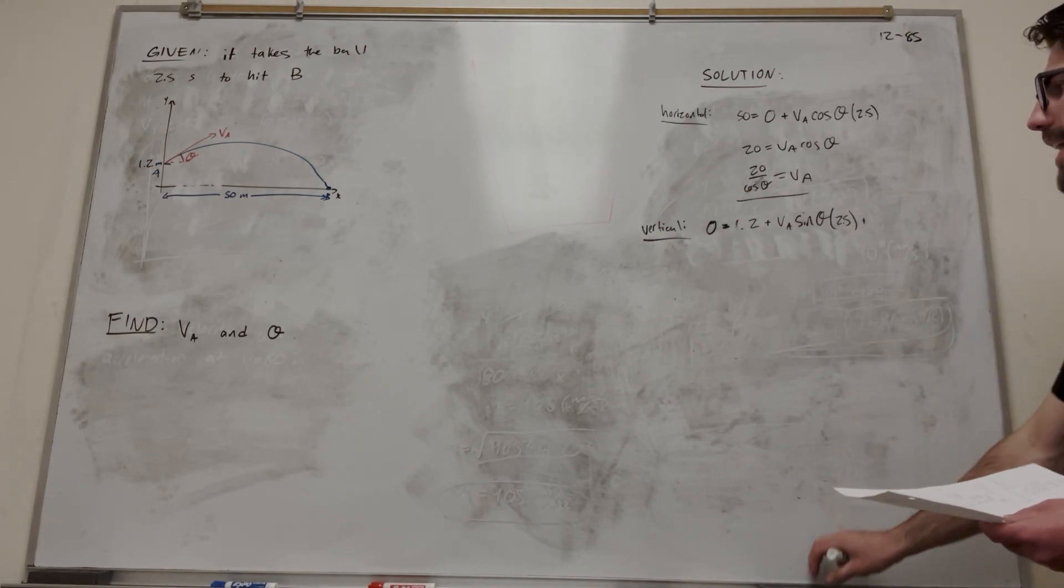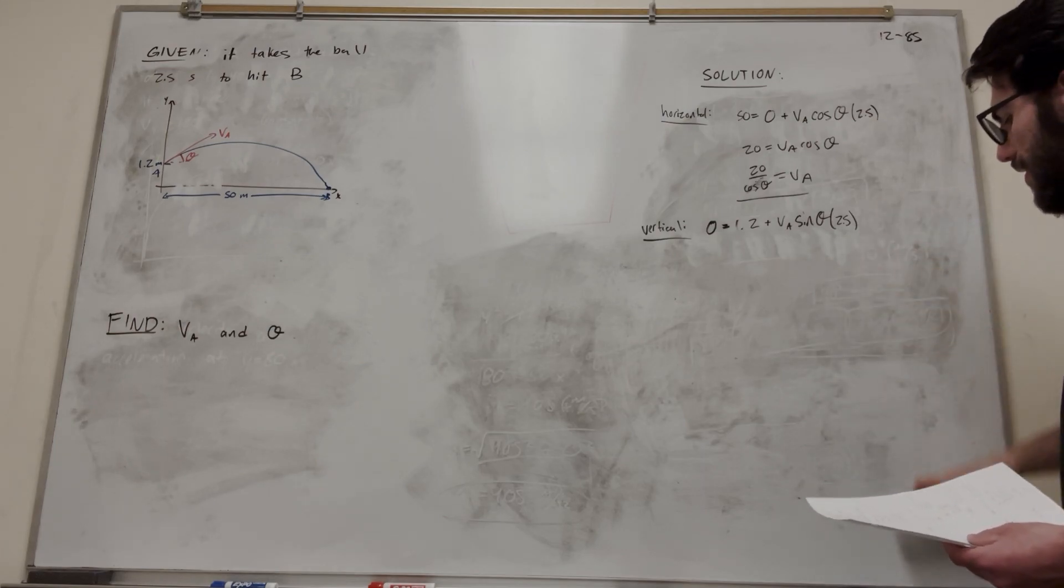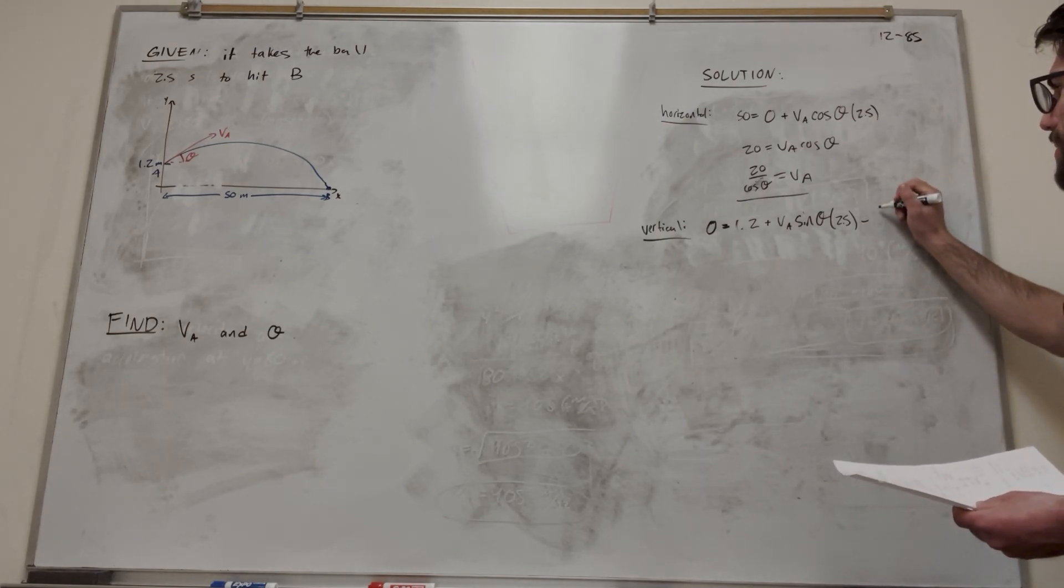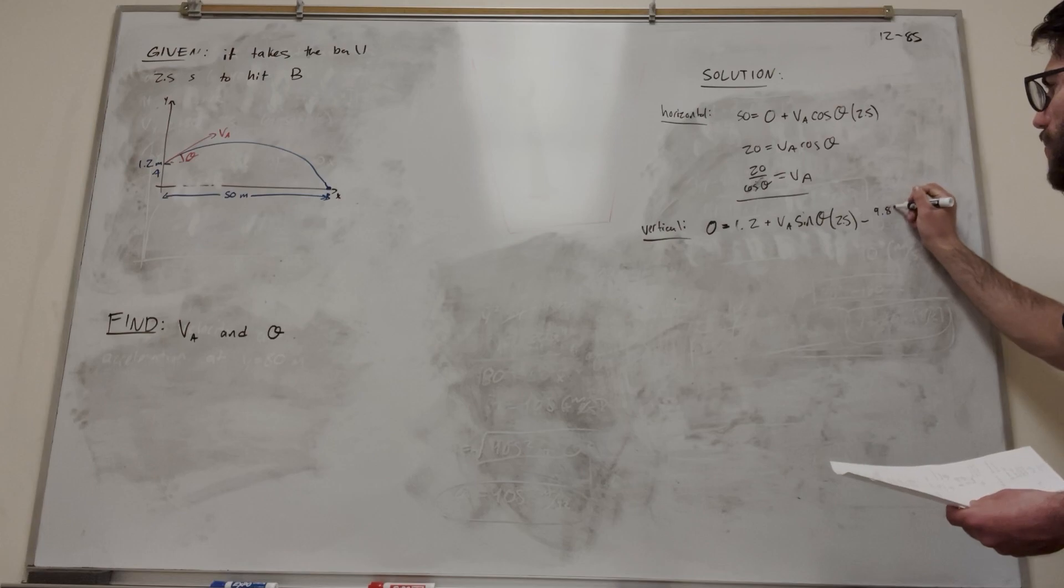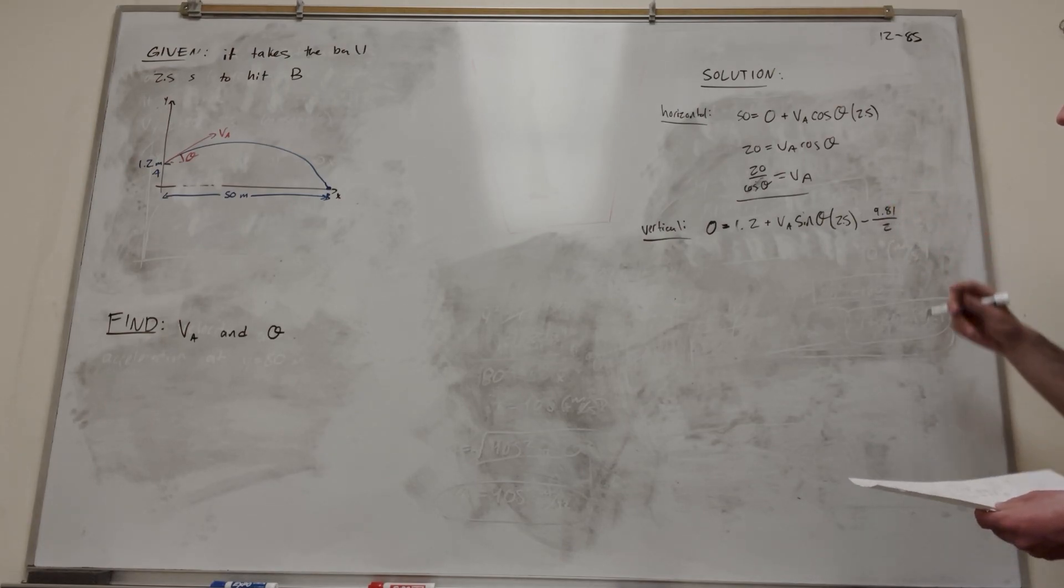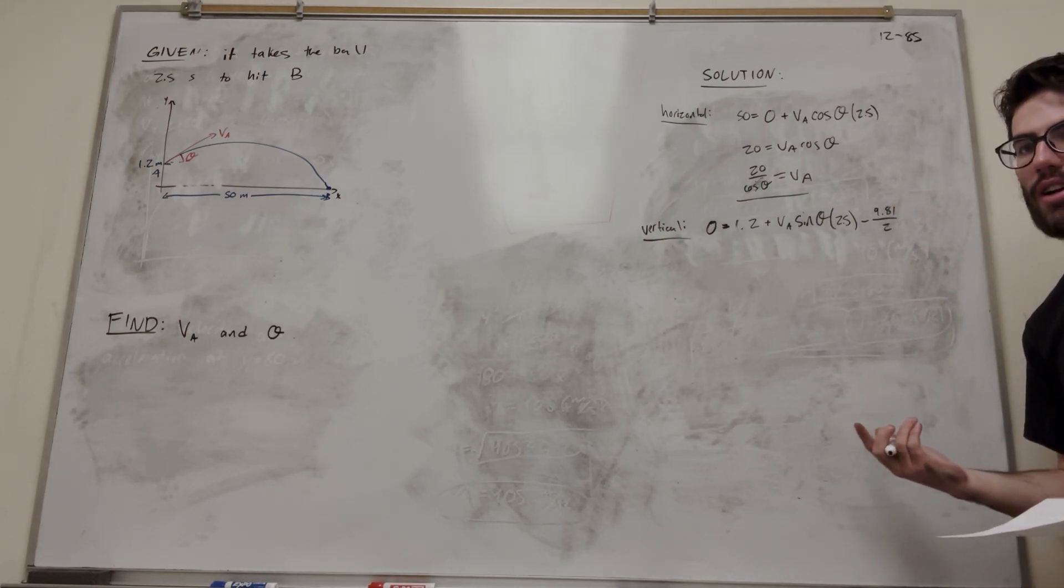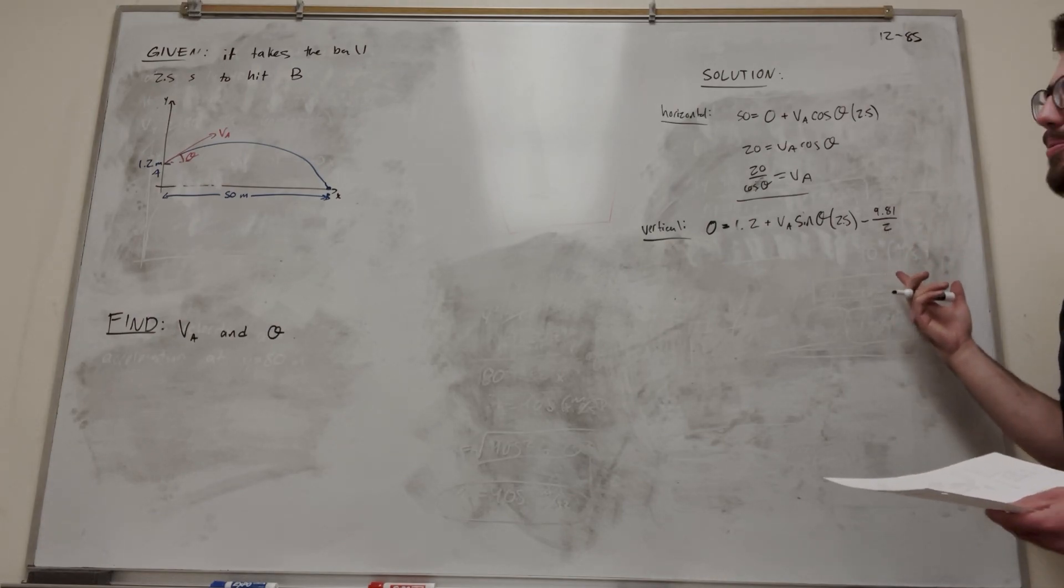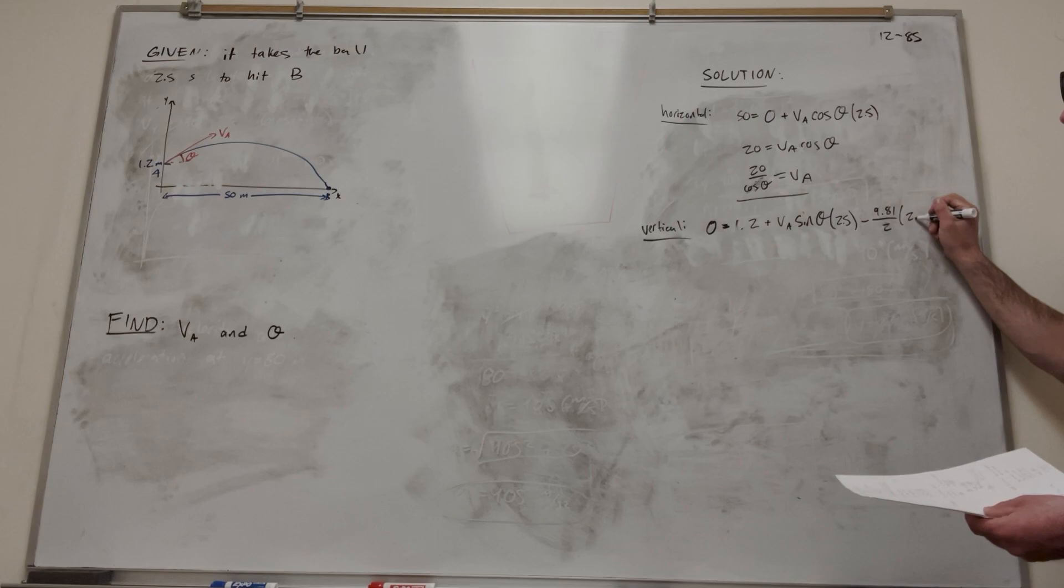And then this time, we're going to again add. But this time, gravity is going to pull down, so we're going to subtract it. So it's going to be negative 9.81 over 2, right? Because it's one-half acceleration times squared. So acceleration is gravity, 9.81. The one-half is this 2. And then times squared is going to be 2.5 squared.